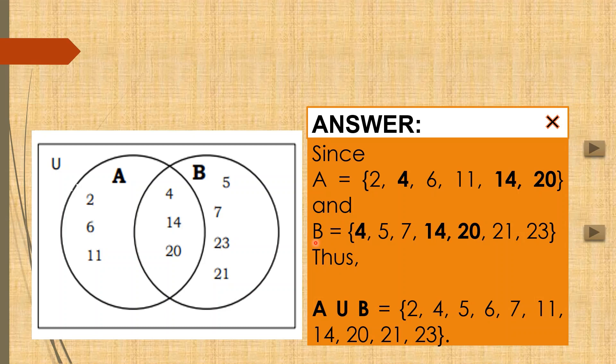Thus, A union B is equal to 2, 4, 5, 6, 7, 11, 14, 20, 21, and 23.